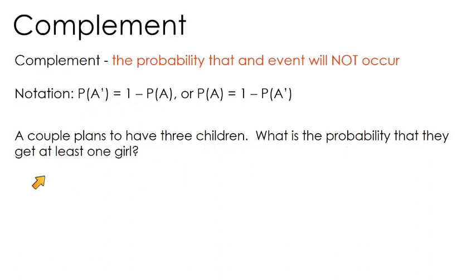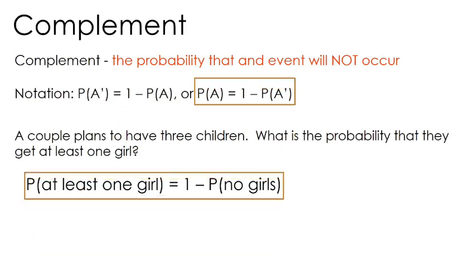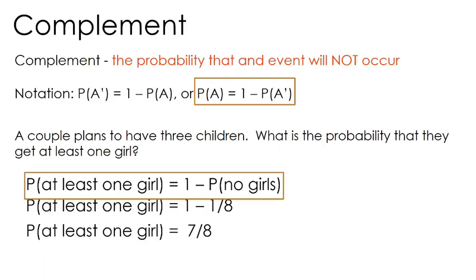For the three-children problem — what's the probability of at least one girl — we can use the complement. The probability of at least one girl equals one minus the probability of no girls. From the last example, the probability of no girls at all was one eighth, because boy-boy-boy was the only one of our eight outcomes with no girls. So the probability of at least one girl is one minus one eighth, or seven eighths.